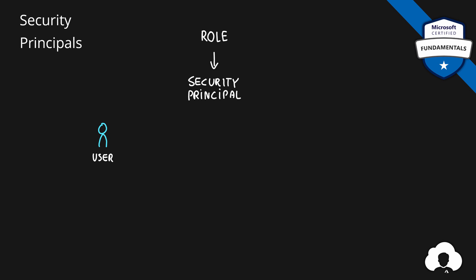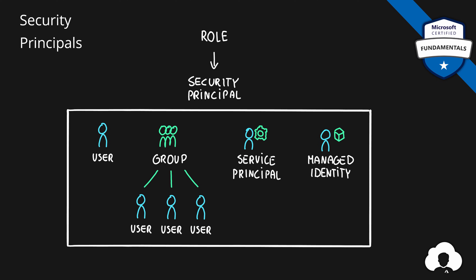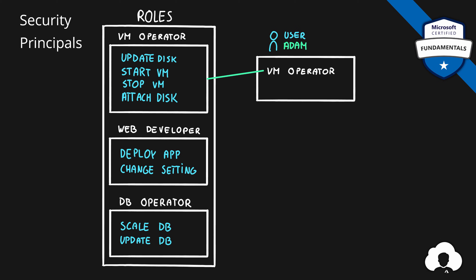Those could be users or groups of users. You can also assign roles to service principles — application accounts in Azure, or accounts tied to a specific service called managed identity. All of those are called security principles and they can be assigned a role. For example, we can assign a user called Adam a virtual machine and database operator role so that Adam can perform support and operation tasks effectively.